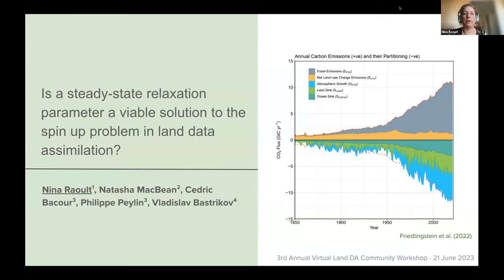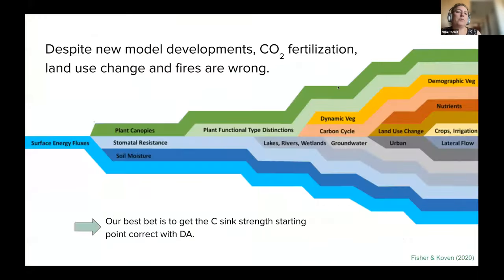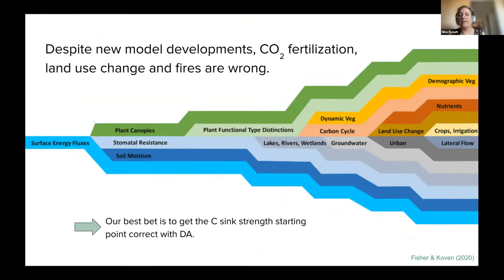A lot of the time we use what we call a steady-state relaxation parameter. I'm going to talk about why we use it, but also the pitfalls and challenges. Land surface models have been increasing in complexity over the last decades, and even though we have a lot of new processes, there are still things we know we're not able to model properly, including fires, CO2 fertilization, and land use change.